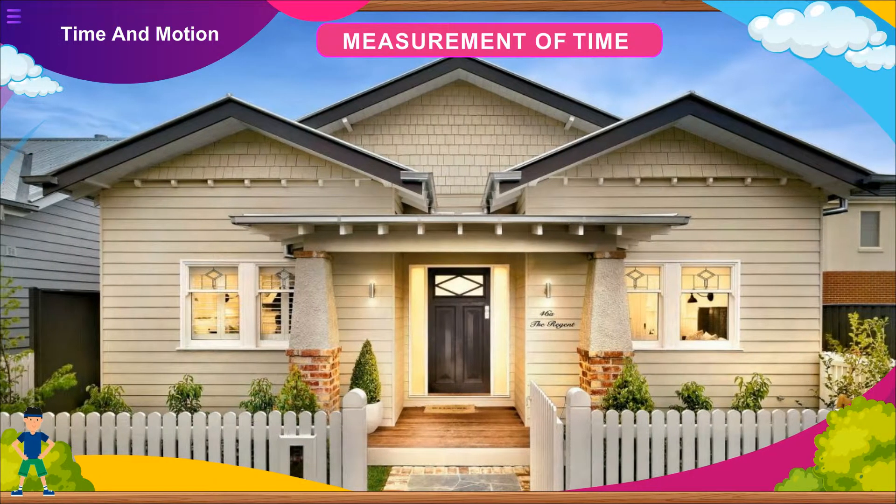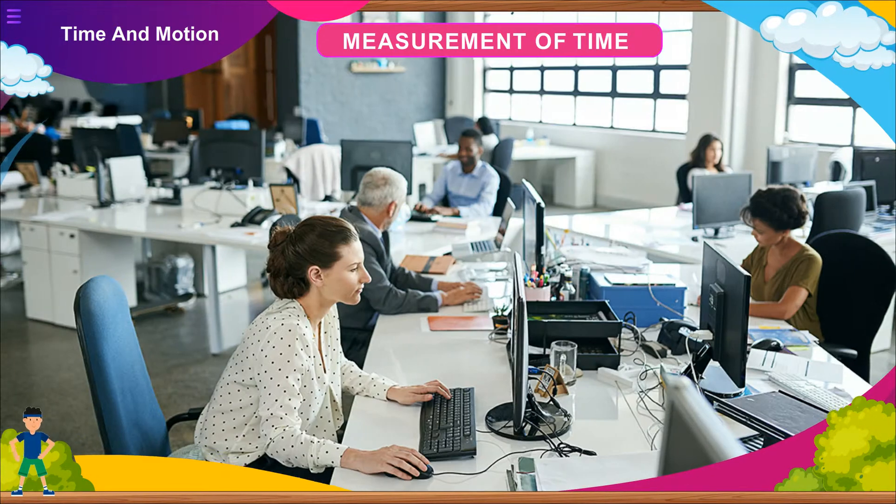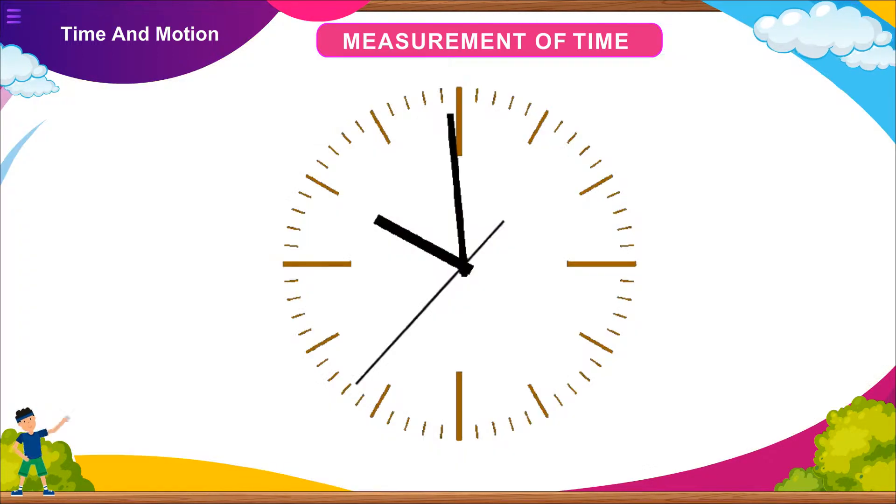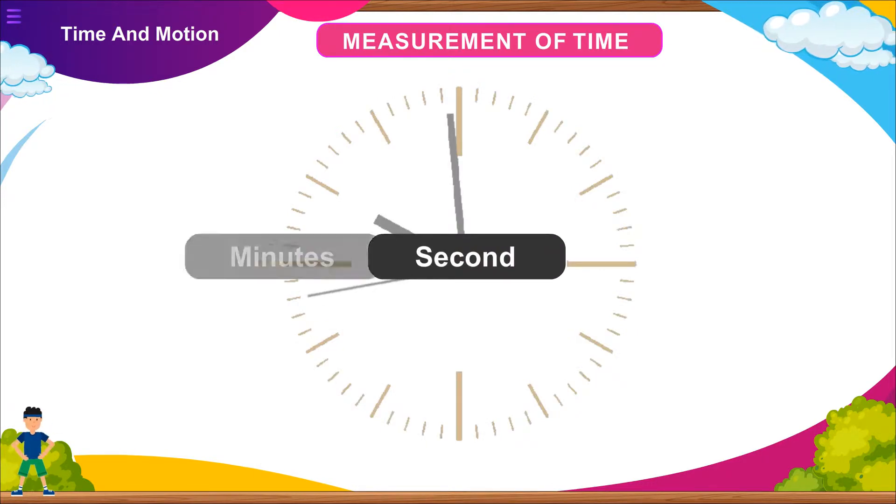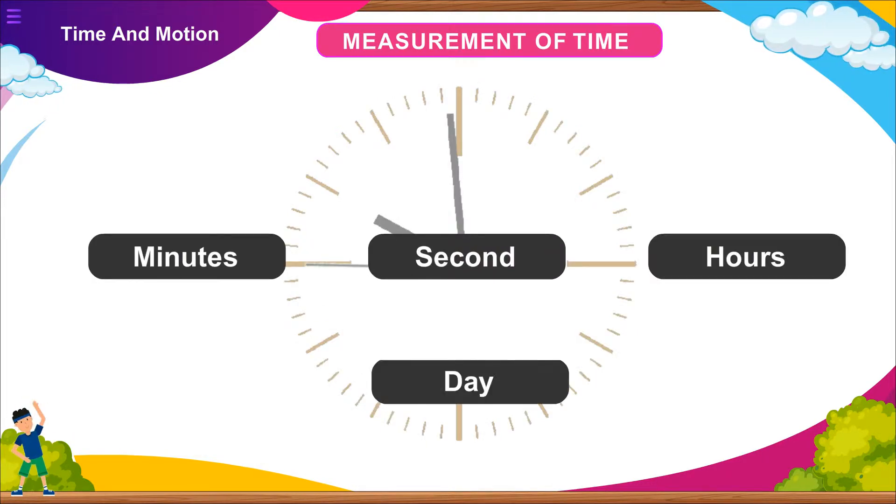Measurement of Time: It is difficult to imagine a house, an office, a school without a clock. A clock is a device to measure time. The standard unit of time is second, the other units being minutes, hours, day and many other.